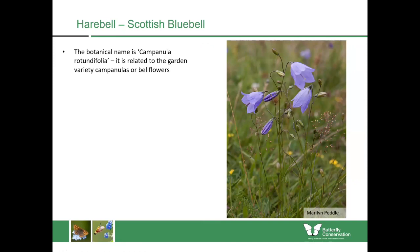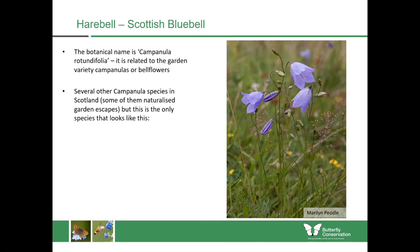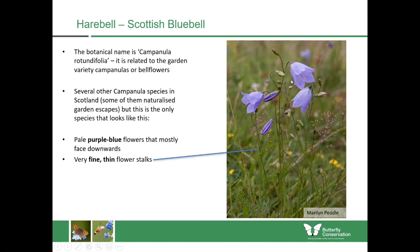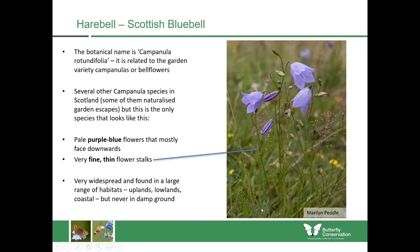Harebell is sometimes also known as the Scottish bluebell, but it's in a completely different family to the regular bluebell found in woodlands. The botanical name is Campanula rotundifolia, related to garden varieties of campanulas or bellflowers — some of which have escaped and can be found in the wild in Scotland. Harebell has pale purple-blue flowers, quite large compared to the size of the stem, mostly facing downwards on very fine thin stalks, with most leaves at the bottom of the plant. It's very widespread, found in uplands, lowlands and coastal places, but prefers well-drained soil.